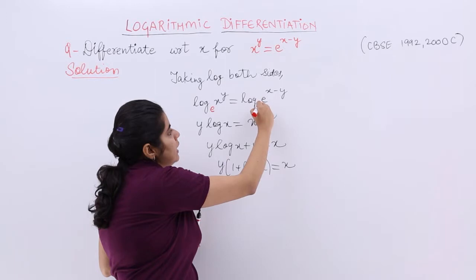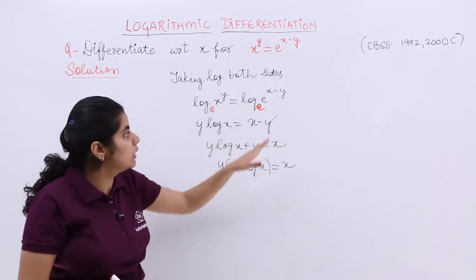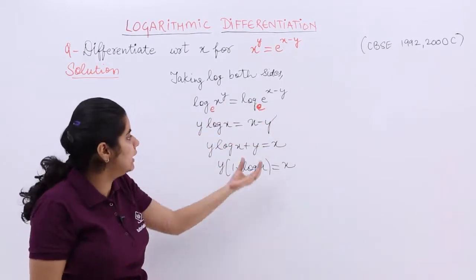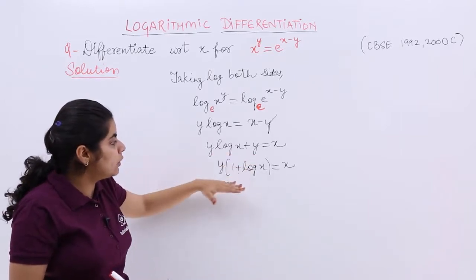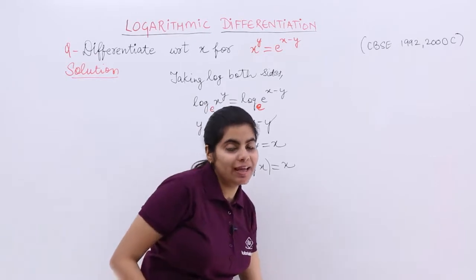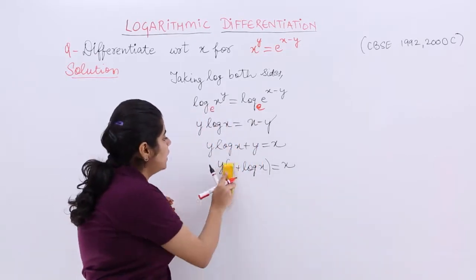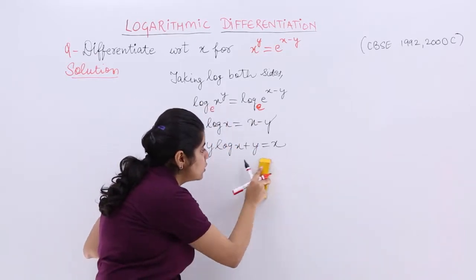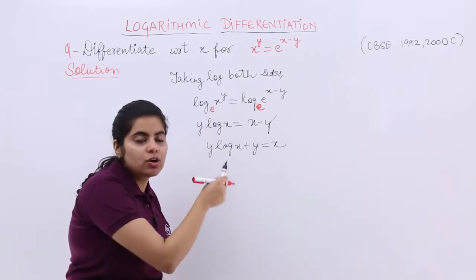So if it is base e and here it is exponential only. So these basically actually vanishes. Cancel. So x minus y is there. Either you can do till here or till here. If suppose you do not want to take the brackets and all.